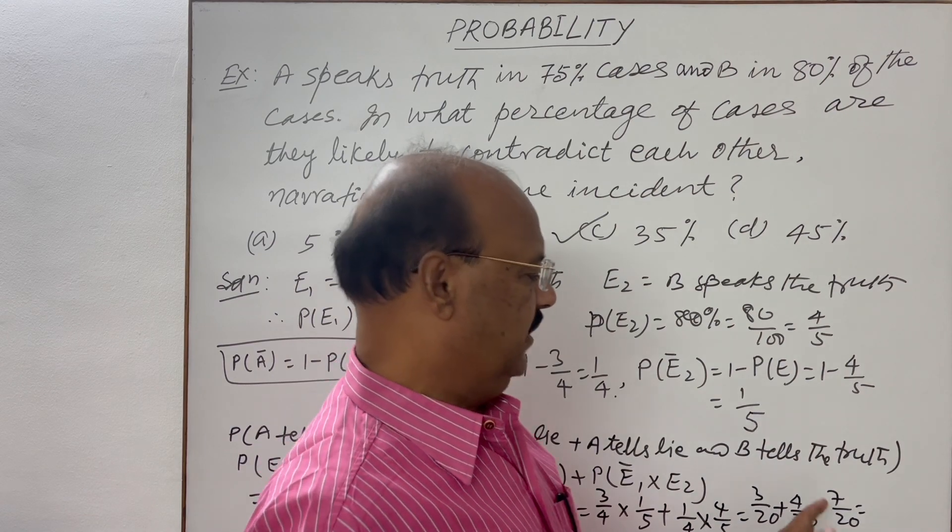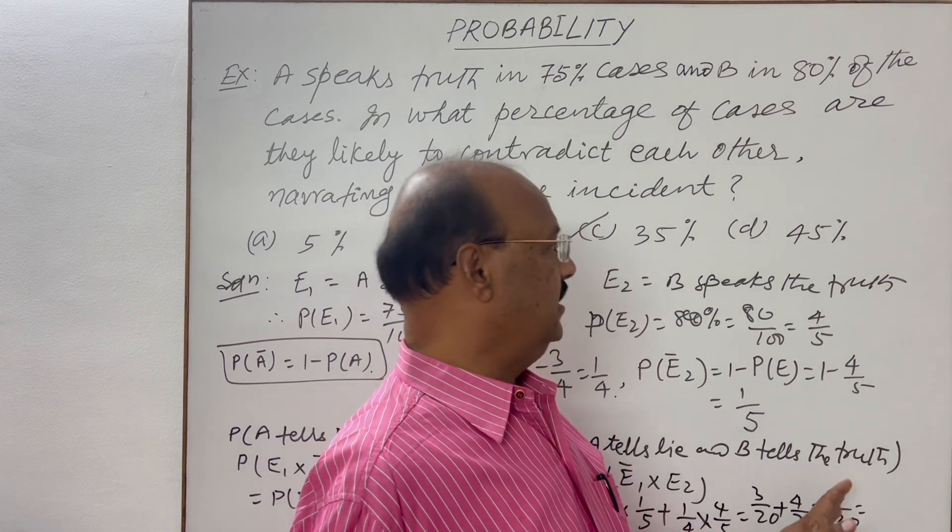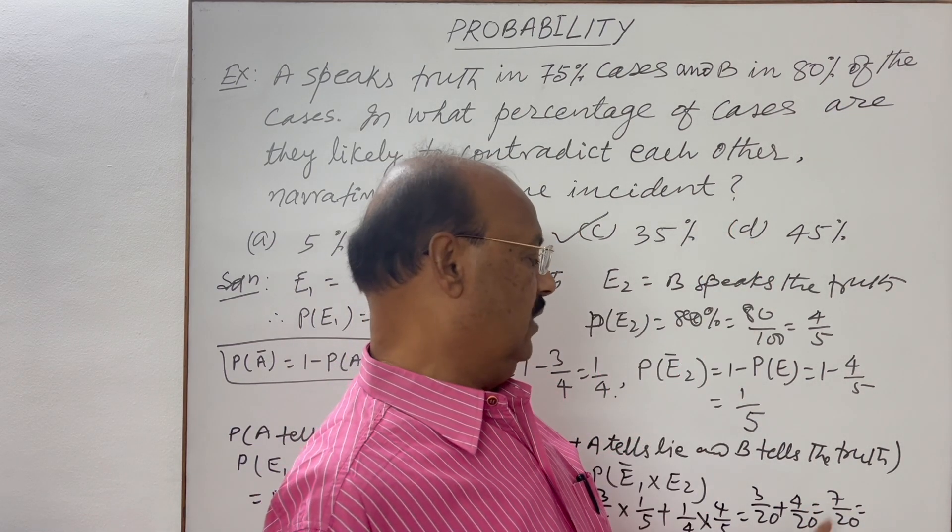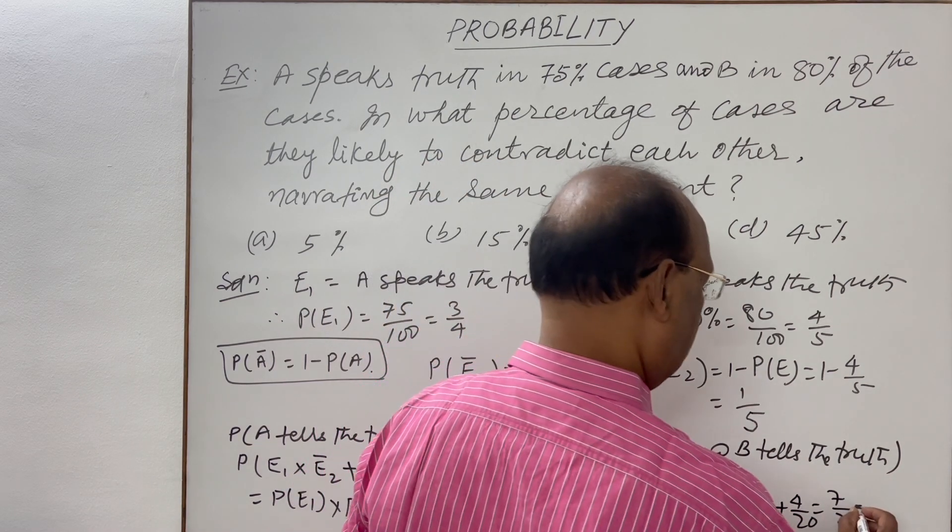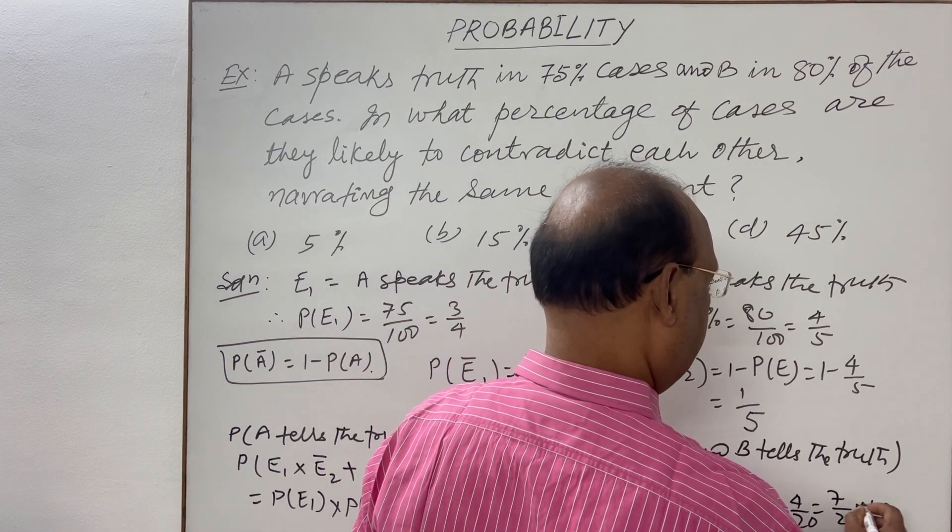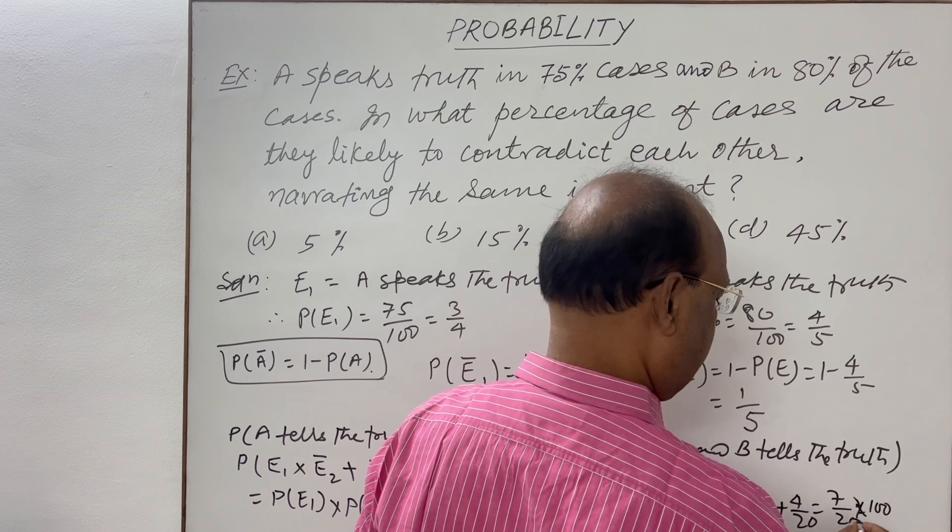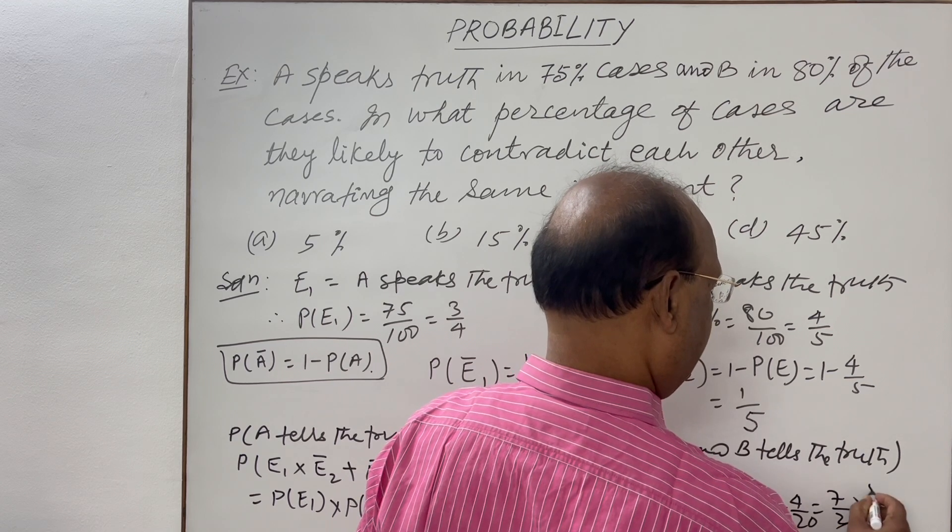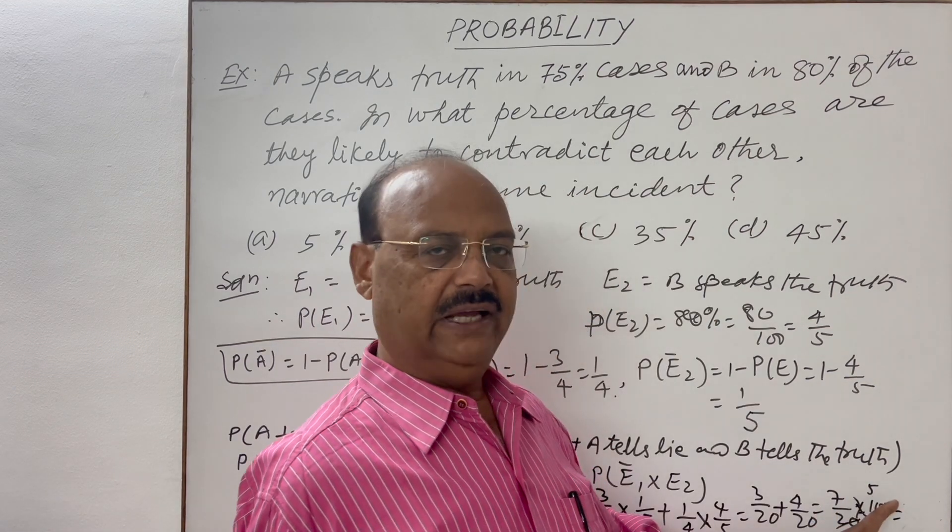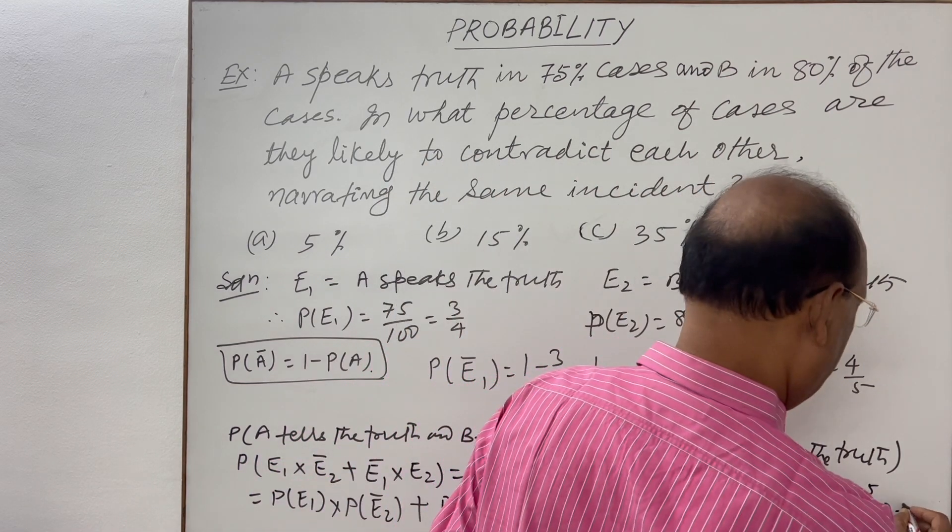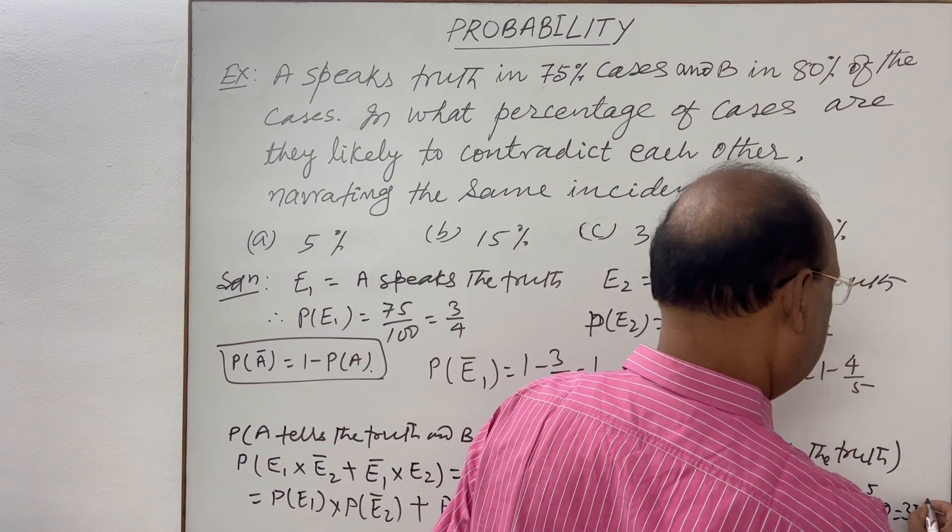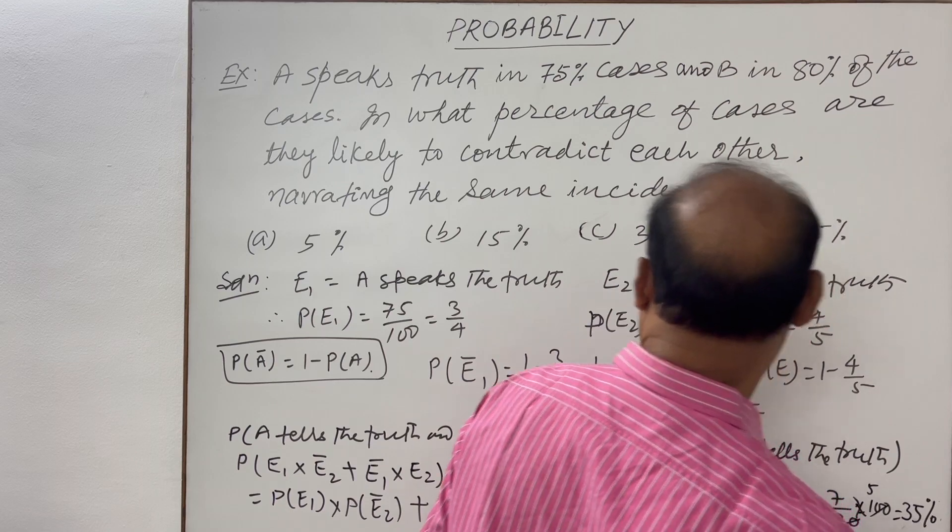When we have to convert it, we have to write it in the form of percentage. We will multiply it with 100. So multiplying with 100 will get the result in the form of percentage. So this is 5, so here 7 into 5 that is 35. So we are getting here answer is 35%.